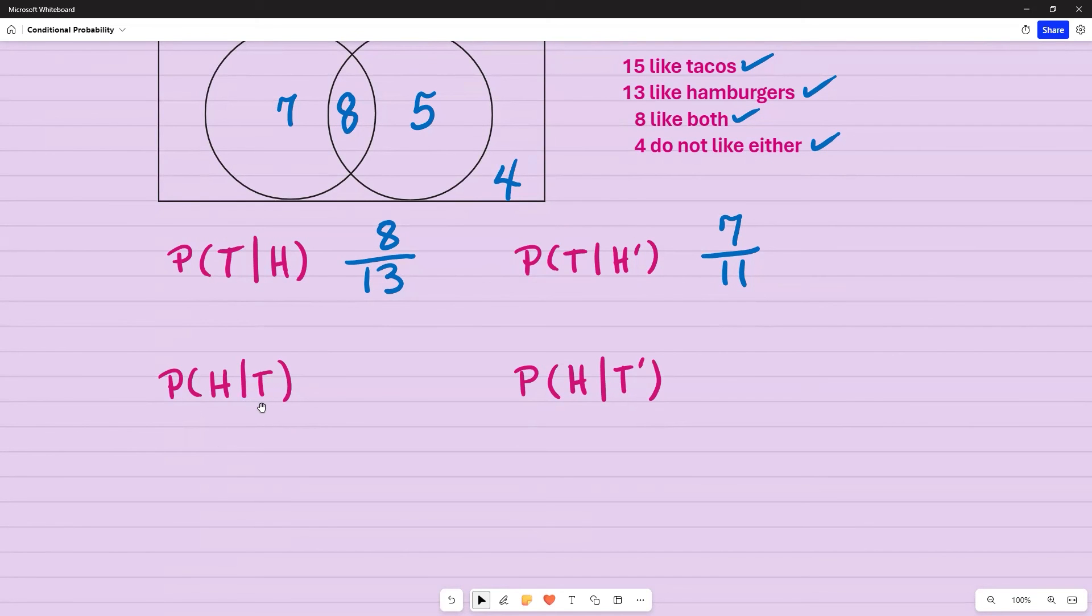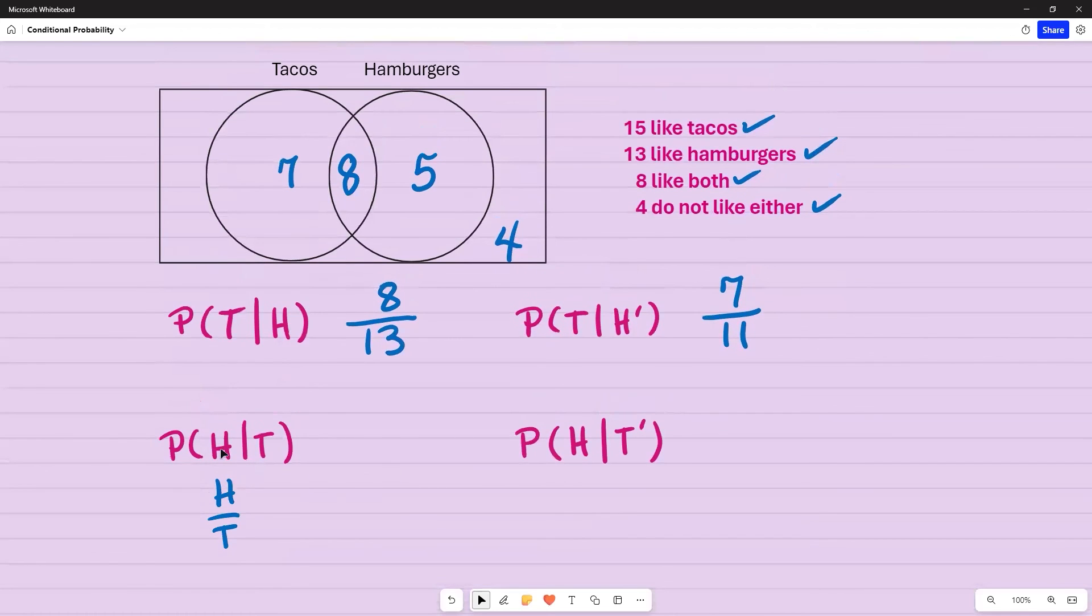When I'm trying to figure out what is in my denominator, I just turn this vertical. So it would look something like this. And then I just substitute based off of that. So I'm asked in this case, what's the probability of someone liking hamburgers given that they like tacos? So I want to go ahead and figure out how many people like tacos, this entire circle. So that's 15 people. Out of those 15 people, how many like hamburgers? So again, the overlap is right here. So they like both hamburgers and tacos. So that's eight.